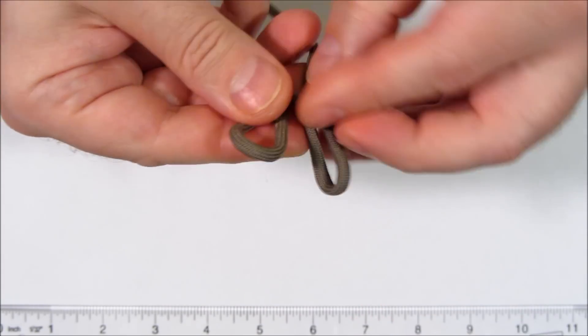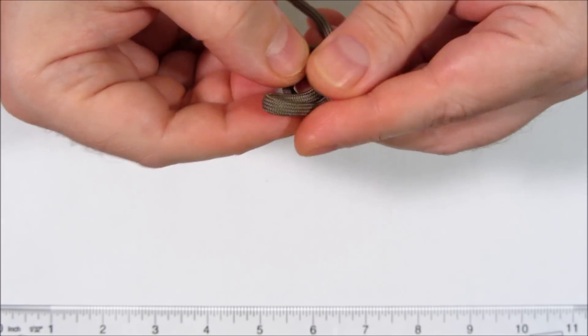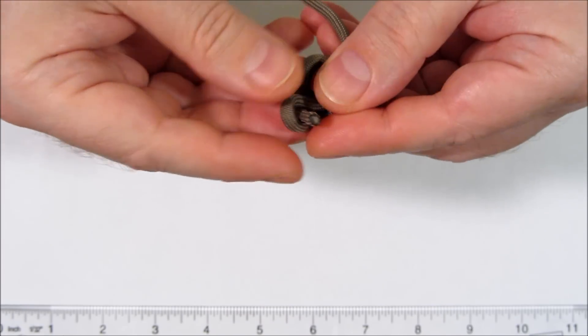Take a loop, fold it down so you have two loops, tuck one loop in here, take the tail, stick it into that loop.